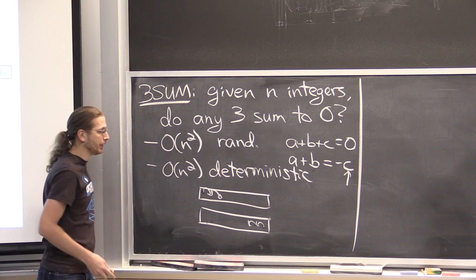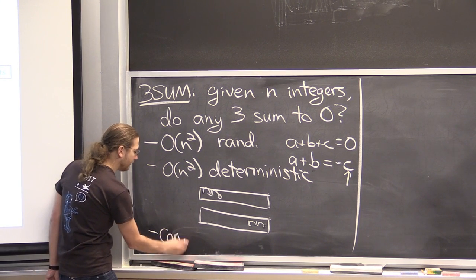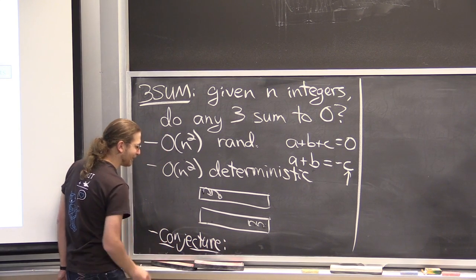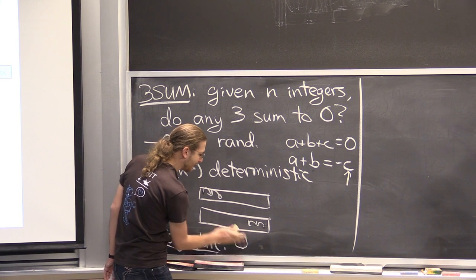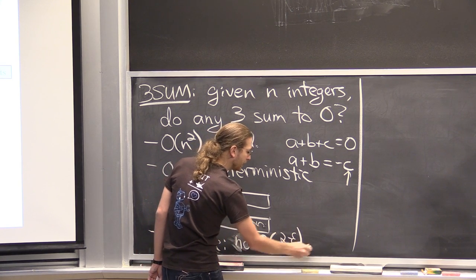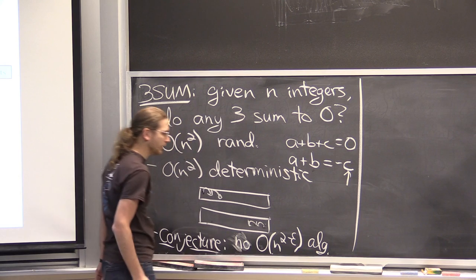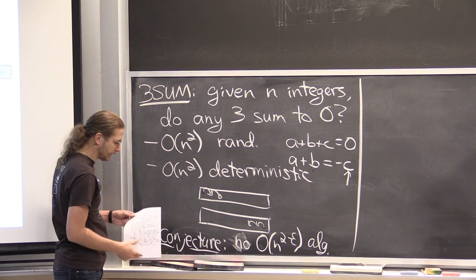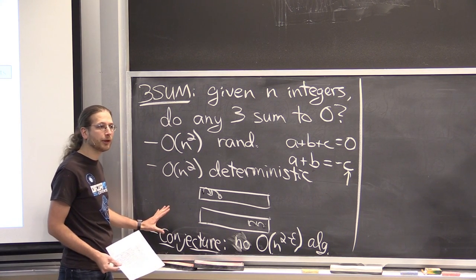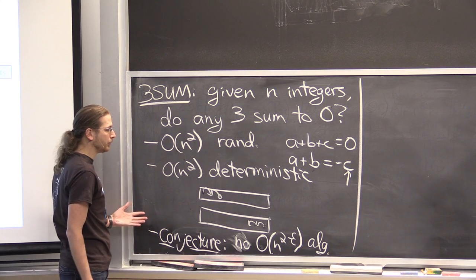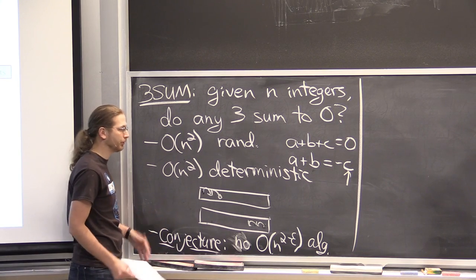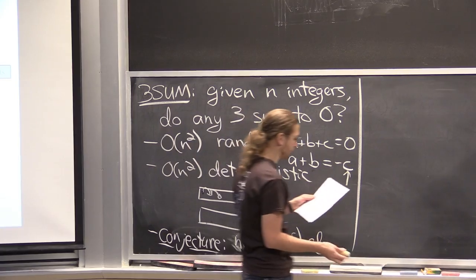3-SUM is quadratic, and the big conjecture is that you cannot solve it any faster — specifically, that there is no n^(2-ε) algorithm in the worst case. This has led to a whole world of 3-SUM hardness lower bounds. If your problem is 3-SUM hard, you expect it also has no n^(2-ε) algorithm, because if it did, so would 3-SUM. People generally believe that's the case for 3-SUM.